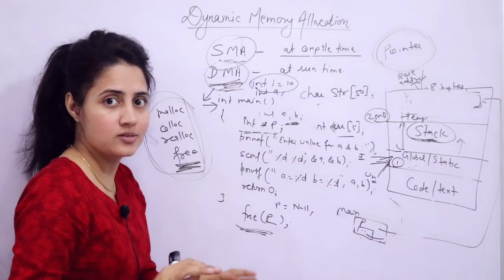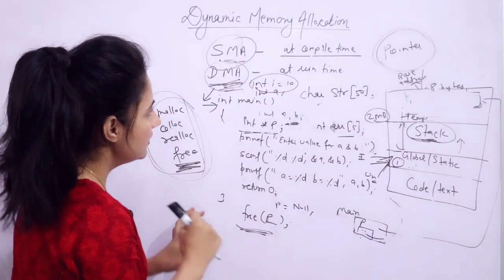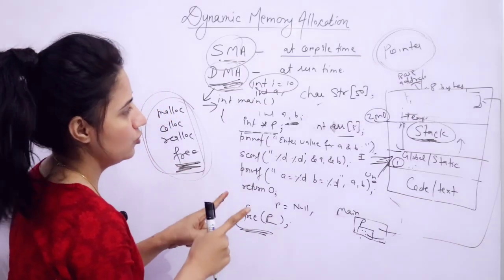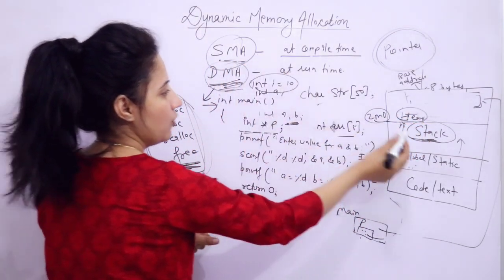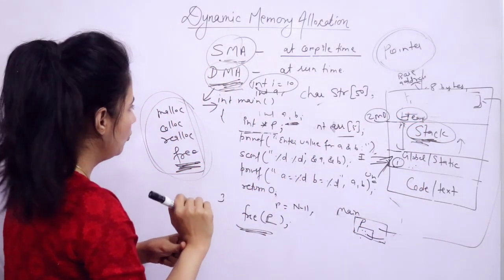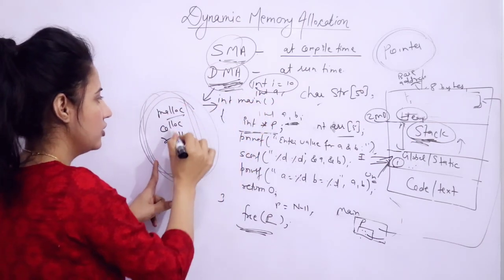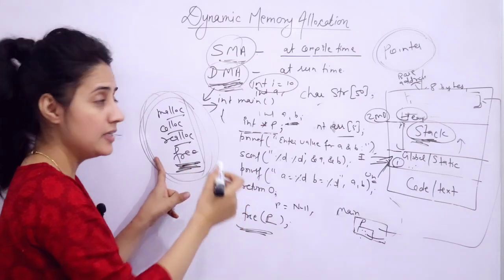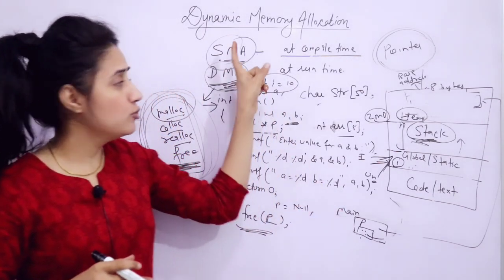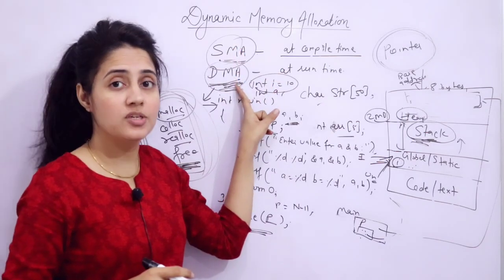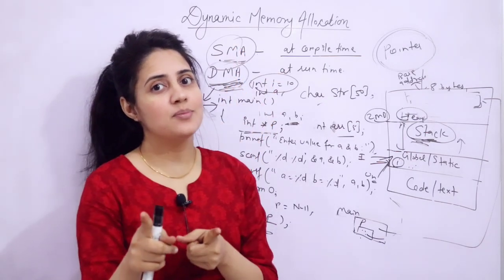I hope the basics of dynamic memory allocation are clear. Memory would be allocated dynamically from the heap part, and statically from the stack part. Using the DMA functions, we can allocate memory dynamically. The use of these functions will be discussed one by one. In the next video, we will see the use of the malloc function with the help of a program. One assignment for you: write down the difference between static memory allocation and dynamic memory allocation — you can write it in the comment box. See you in the next video, bye-bye.